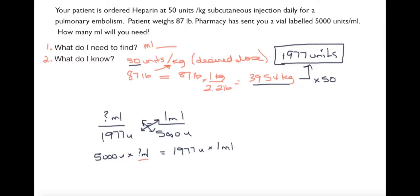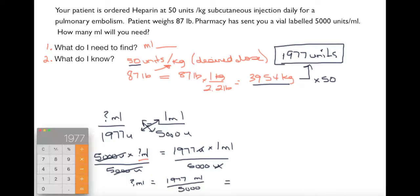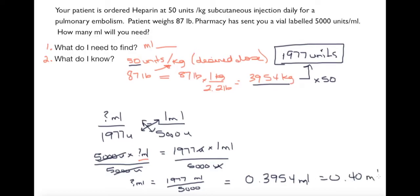Now I want to isolate my unknown dosage, so I'll divide both sides of the equation by 5,000 units. In doing so, that will get rid of the 5,000 units on the left hand side of the equation. On the right hand side of the equation I can get rid of units, so now I have my unknown dose is equal to 1977 mls over 5,000, and this is equal to 0.3954 mls, rounding that up to 0.40 mls.